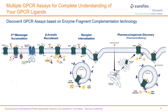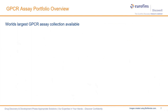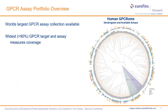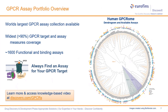This platform is a homogeneous mix-and-assay format that doesn't require washing, centrifugation, or filtration, and is robust and highly scalable for high-throughput screening, continually validated by customers and internal screening and profiling teams. To learn more about the world's largest collection of GPCR functional and binding assays that cover over 90% of the human GPCR, visit our website or contact us directly to get started on your GPCR research or drug discovery and development program today.